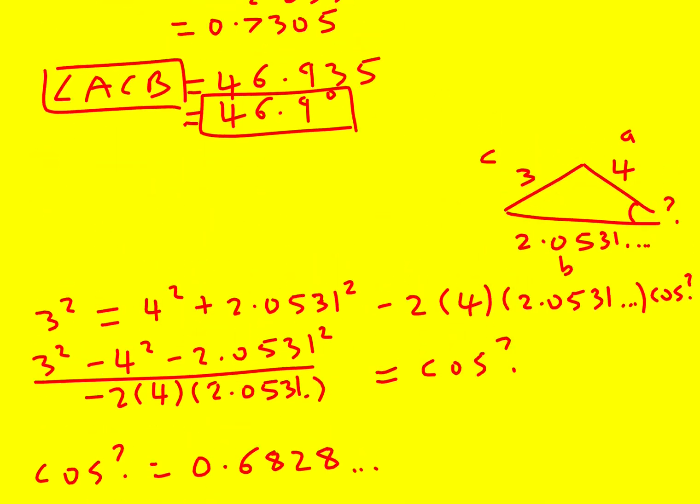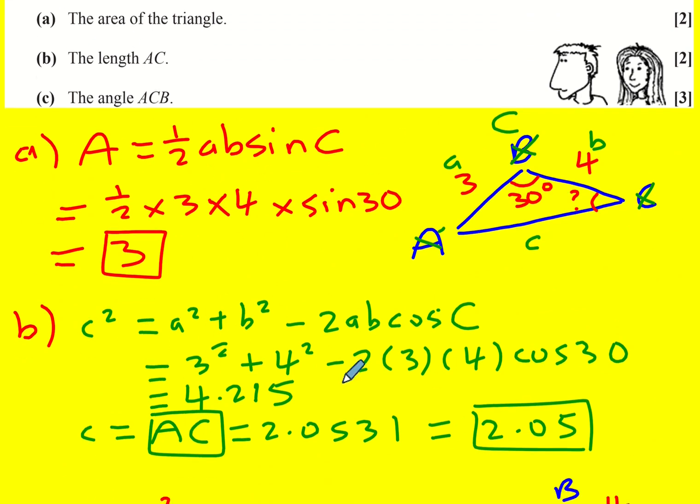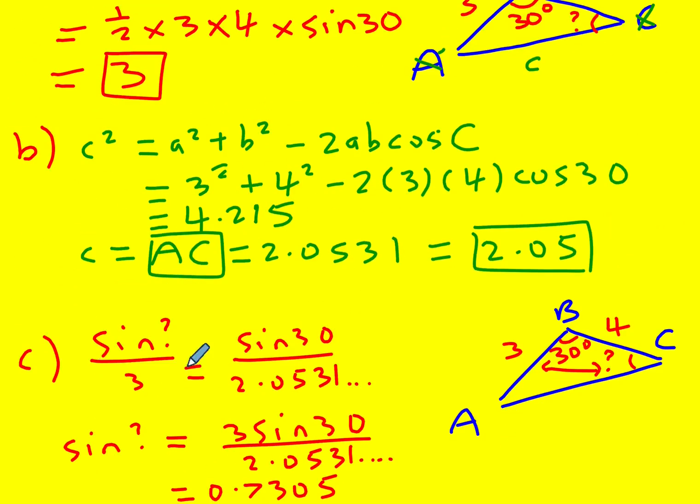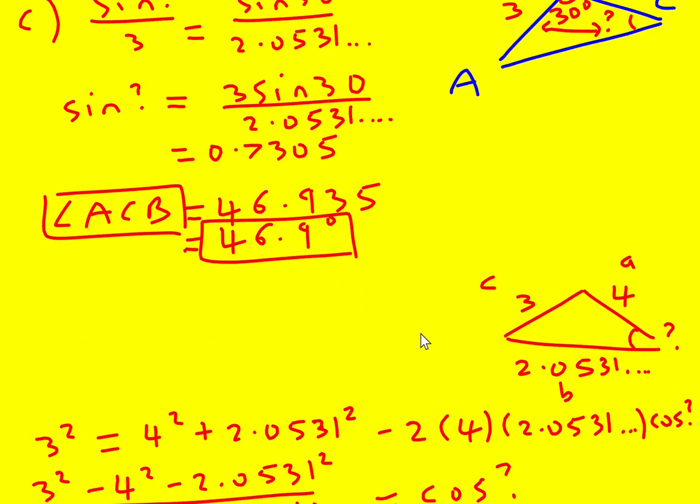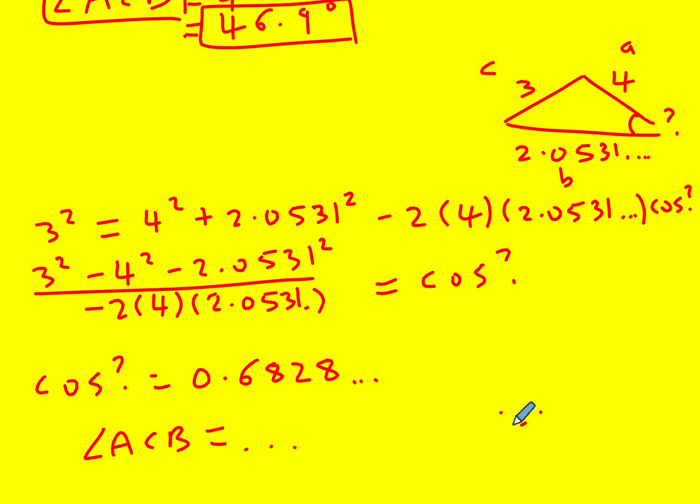So I hope that makes sense. You know, for A, definitely the way to go. For B, definitely the way to go. For C, there's a few different options. But yeah, I've used the sine rule and the cosine rule to get the answers. Yeah, so that's it. Thank you.